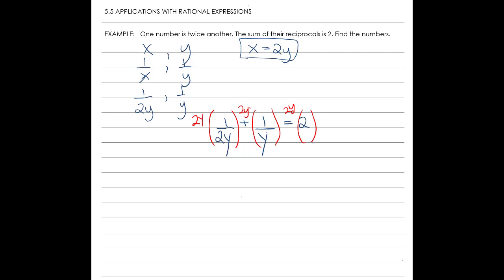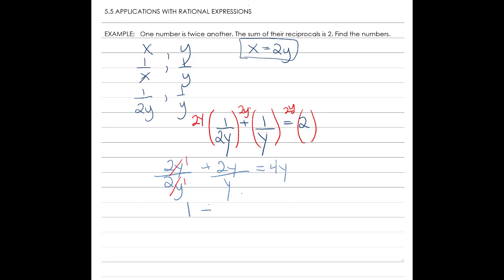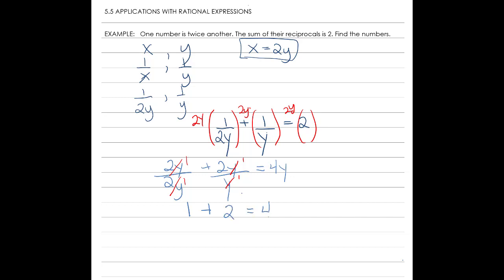2y times 1 over 2y is 2y over 2y, plus 2y times 1 over y is 2y over y, equals 2y times 2, which is 4y. We can reduce: 2y over 2y equals 1, and 2y over y equals 2, giving us 1 plus 2 equals 4y. So 3 equals 4y, and dividing both sides by 4, y equals 3 fourths.